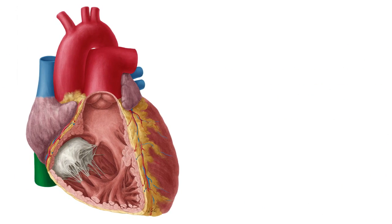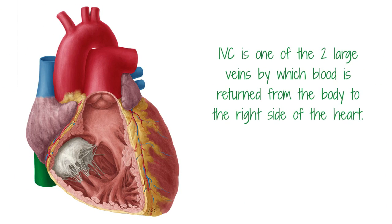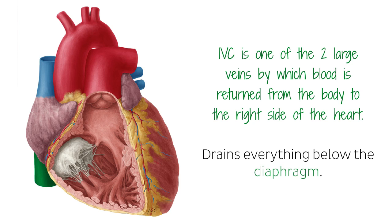The IVC is one of the two large veins by which blood is returned from the body to the right side of the heart. After circulating through the body systemically, deoxygenated blood returns to the right atrium of the heart, either through the superior vena cava, which drains the upper body, or the IVC, which drains everything below the diaphragm, including the lower trunk, abdomen, pelvis, and lower limbs.